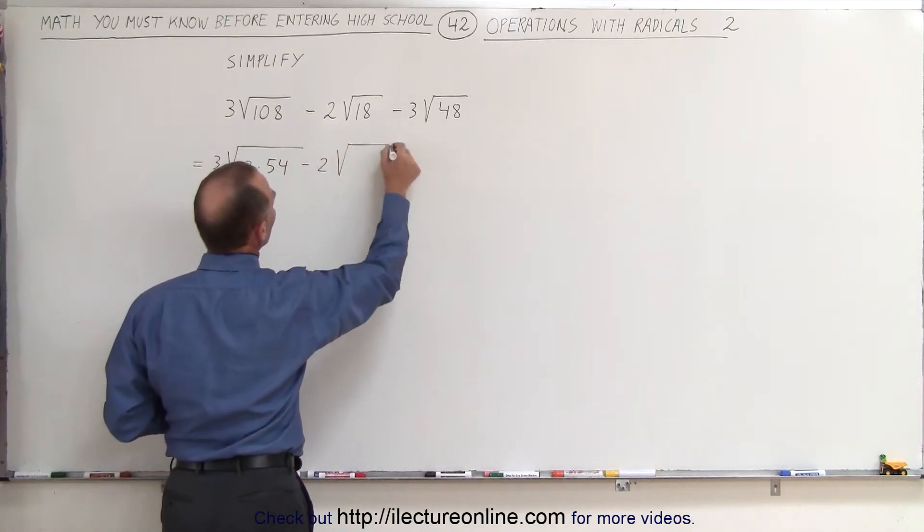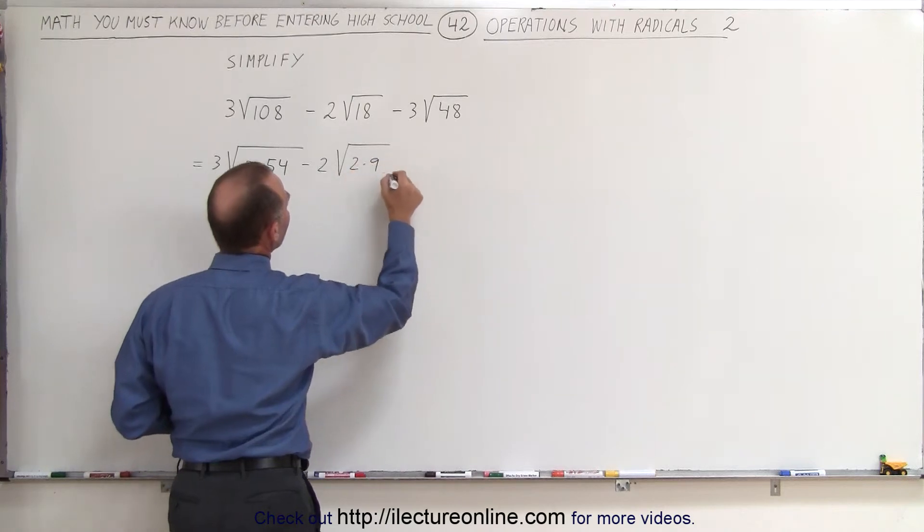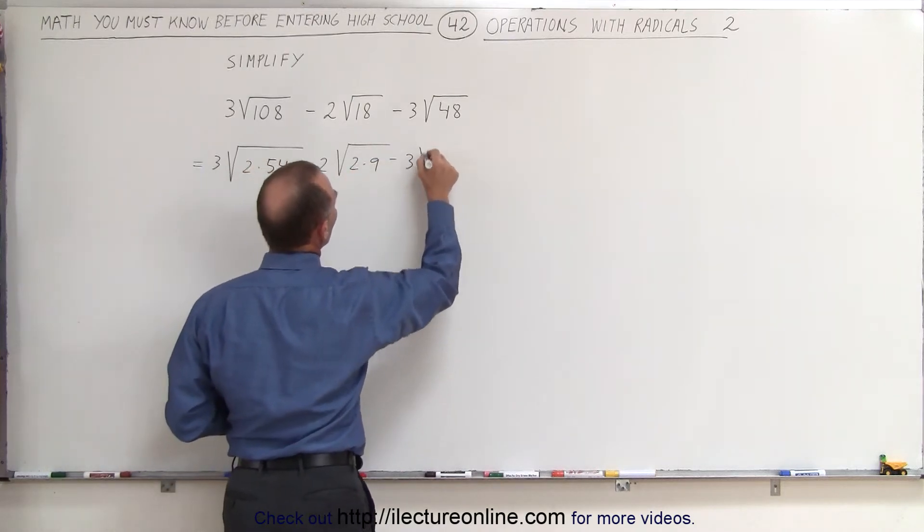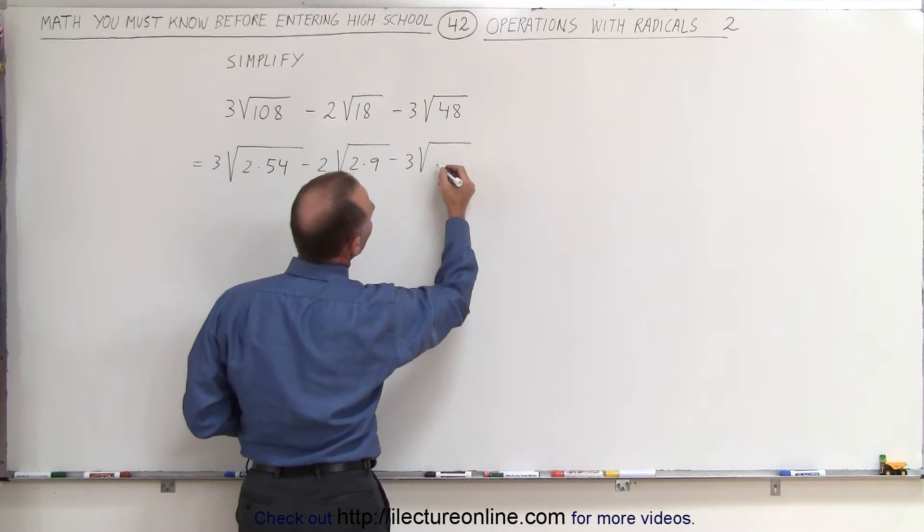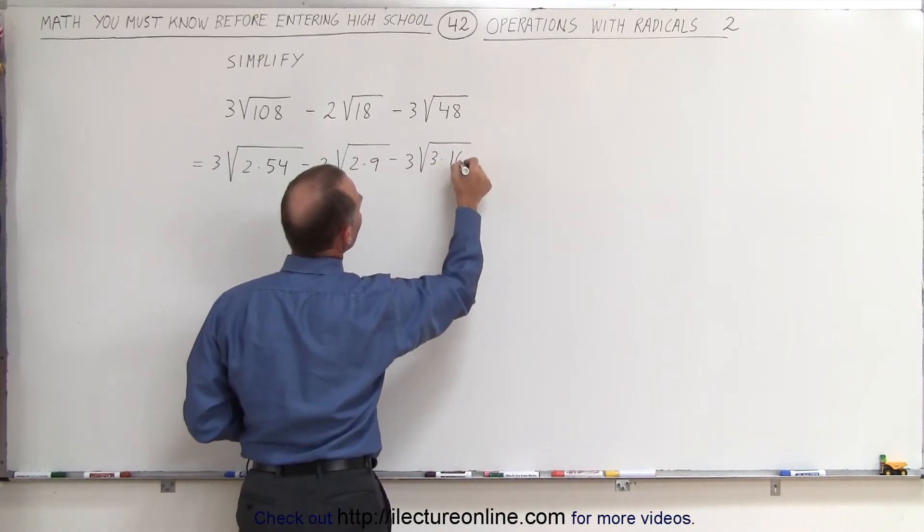minus 2 times the square root of 2 times 9 minus 3 times the square root of, let's see, how about 3 times 16?